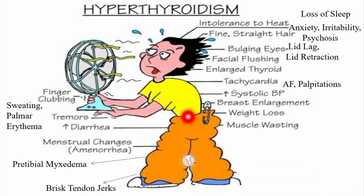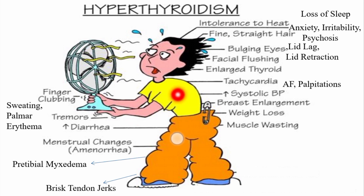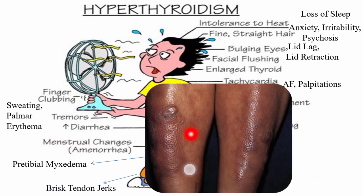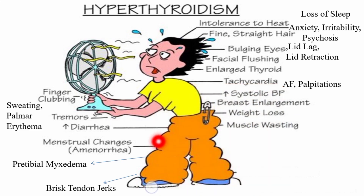Due to excessive thyroid hormone there is often muscle wasting, because in excessive quantities the hormone becomes a protein catabolic hormone. A very important clinical sign is brisk tendon jerks. There may also be pretibial myxedema, which can be found in Graves' disease. In females there may be menstrual changes and amenorrhea.